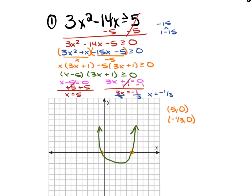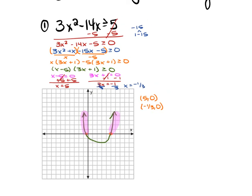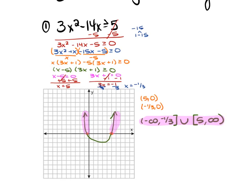Now, what are your answers? What you're really looking at is that inequality sign — the trinomial is greater than or equal to 0. So the x values that satisfy this are anything where the parabola is at or above the x-axis. In interval notation, that would be negative infinity up to negative one-third, including negative one-third, union with 5 to positive infinity — so negative infinity to negative one-third bracket union bracket 5 to positive infinity.